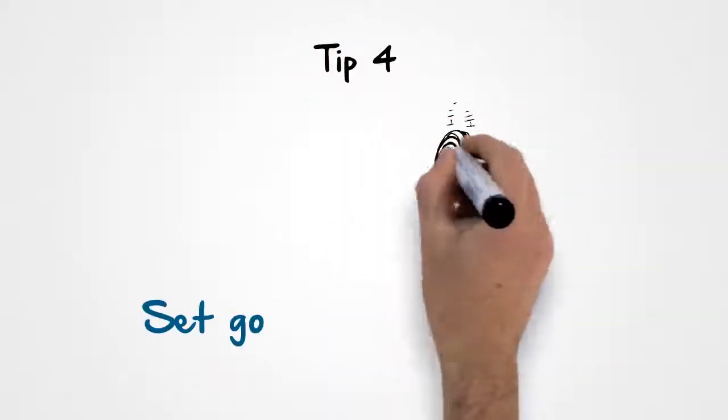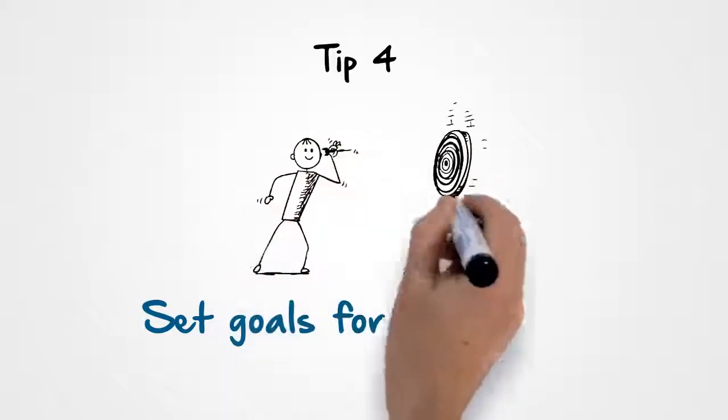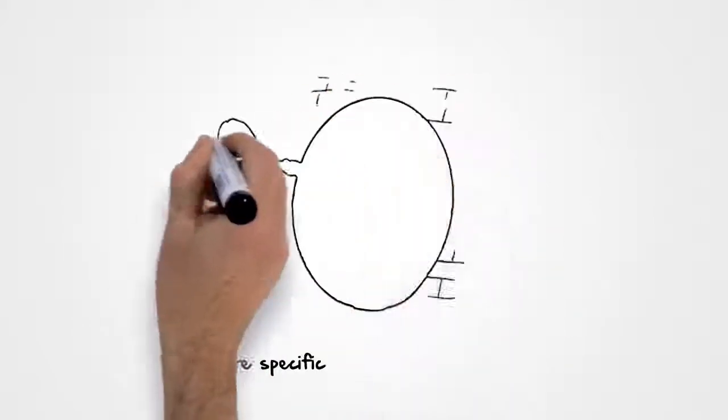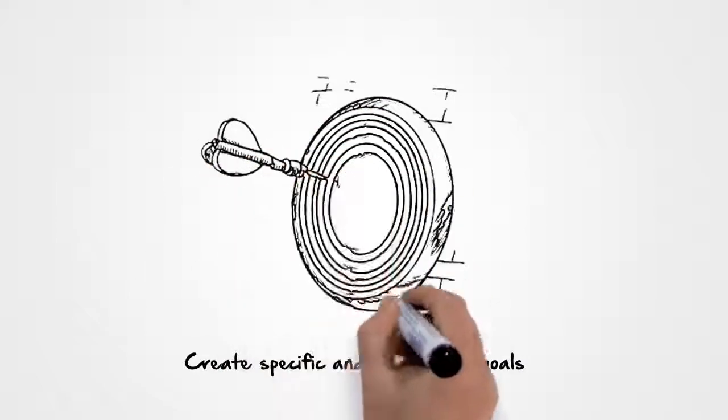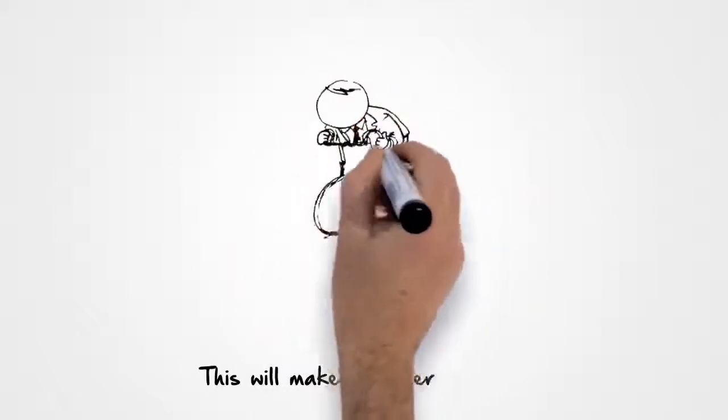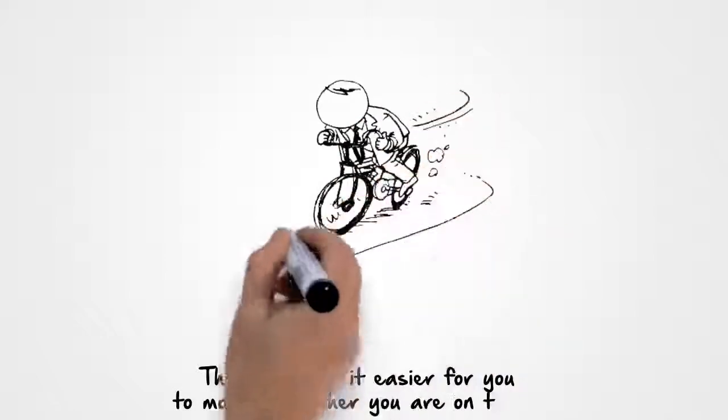Tip 4. Set goals for each area. Create specific and time-bound goals that will help you to move closer to achieving your dream. This will make it easier for you to monitor whether you're on track.